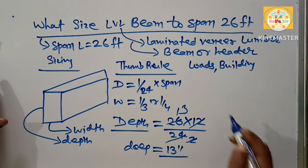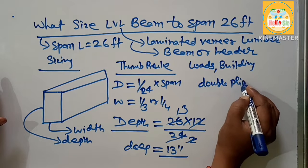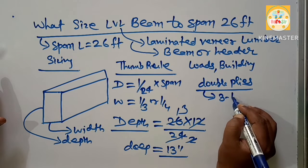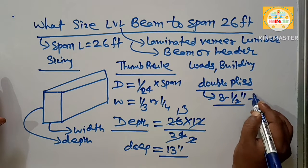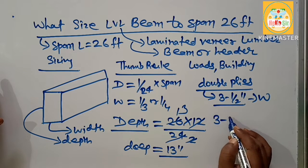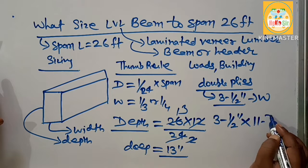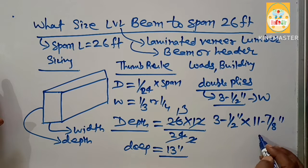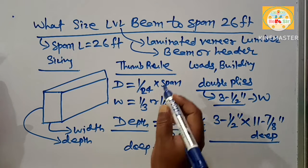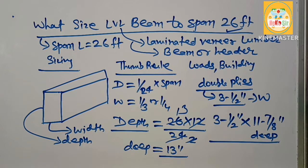You need something like double ply, and the thickness of double ply is about 3.5 inches. This is the width. So you need 3.5 inches width and 11 and 7/8 inches deep LVL beam size for the span length of 26 feet. Thank you.